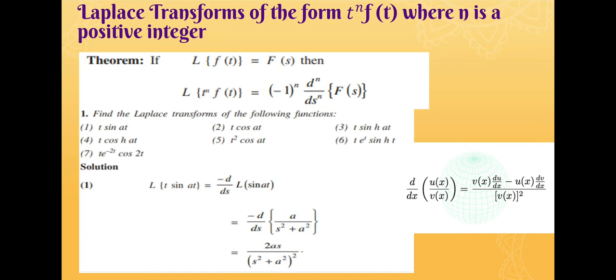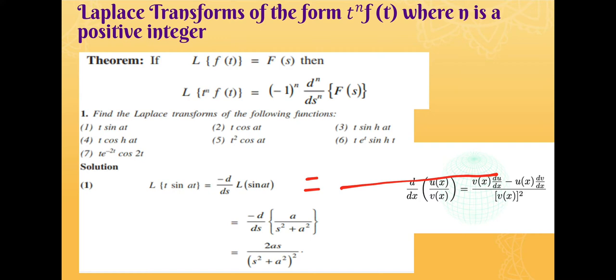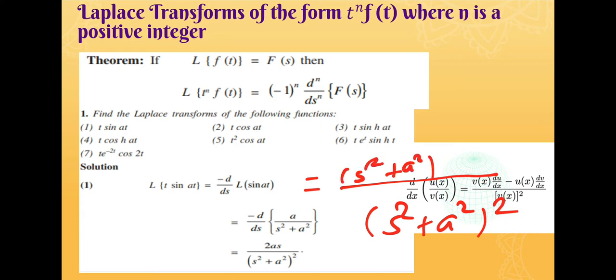Using the quotient rule: differentiation of u/v equals (v·du minus u·dv) divided by v². Here u is a and v is s² + a², so v² is (s² + a²)².